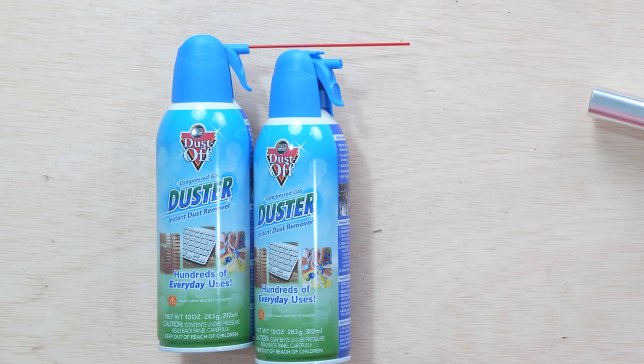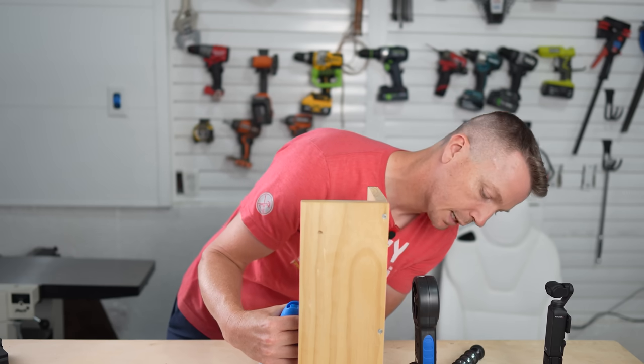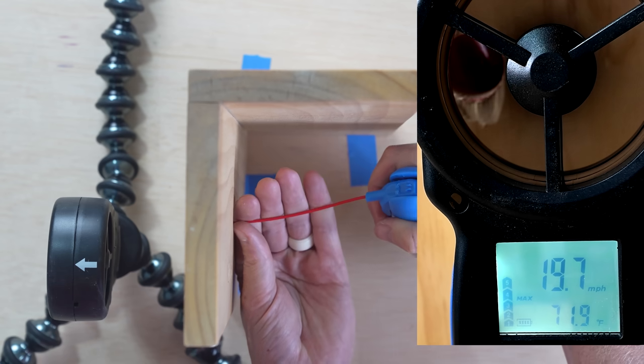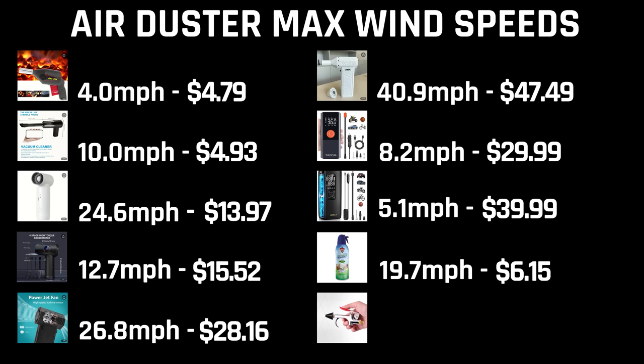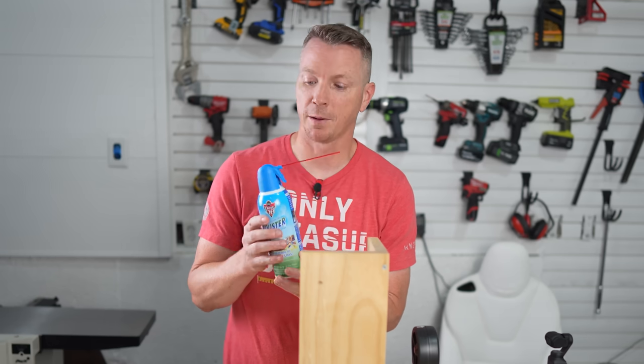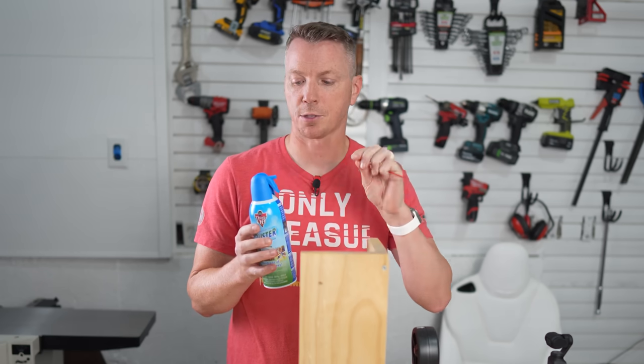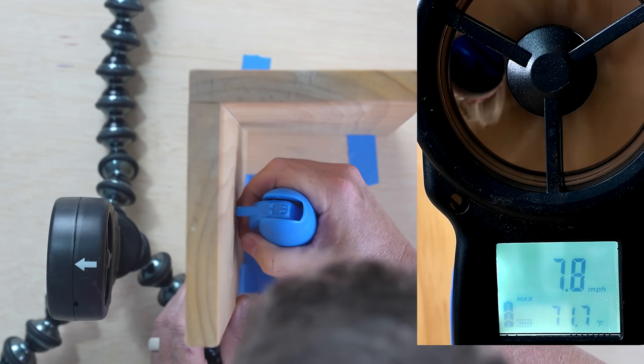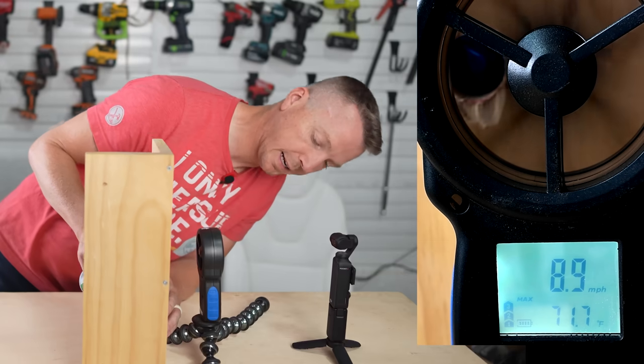Next up we're going to try a can of compressed air. We're going to try it with and without the straw and let's see what we get. And we ended up with 19.7. So it does a pretty decent job. Definitely a fair amount of wind output. Just for good measure, literally, let's take out the straw and try it here just to make sure it's not any better. 8.9.